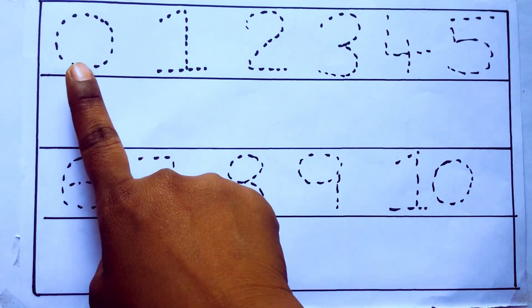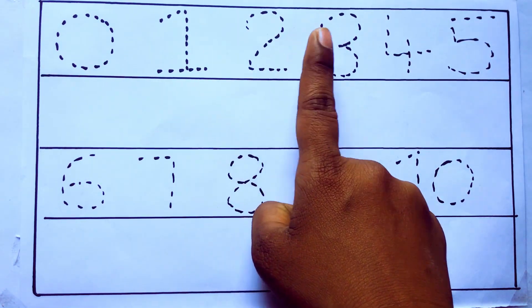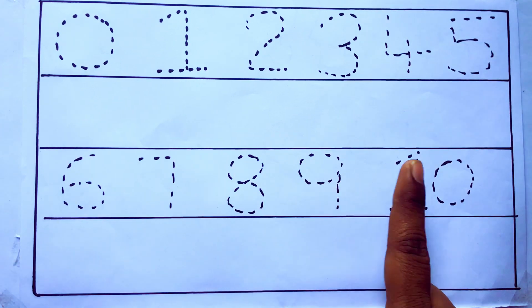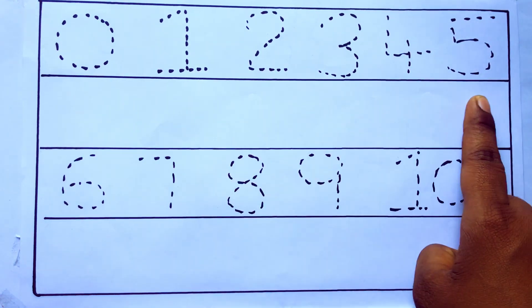0 to 10: 0, 1, 2, 3, 4, 5, 6, 7, 8, 9, 10, and rewriting the numbers.